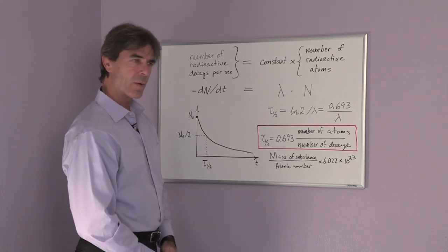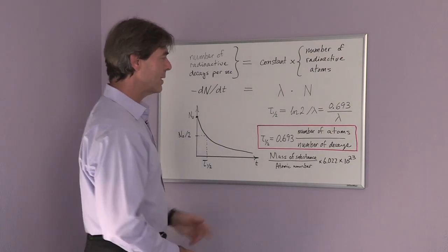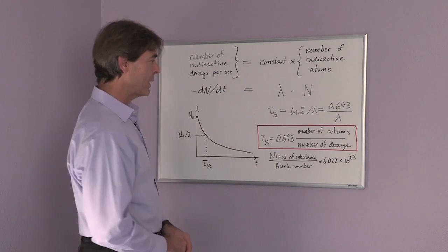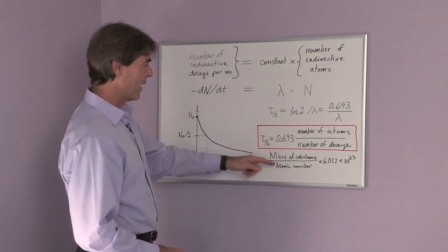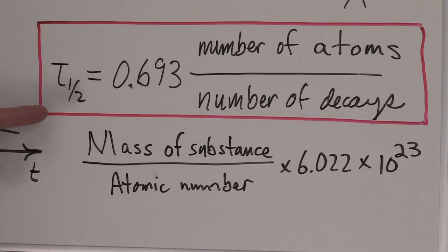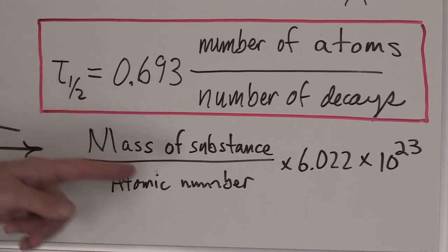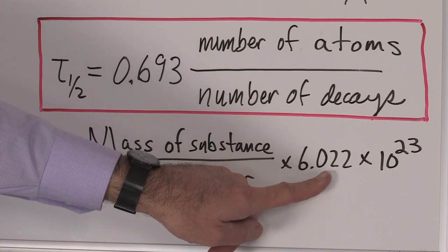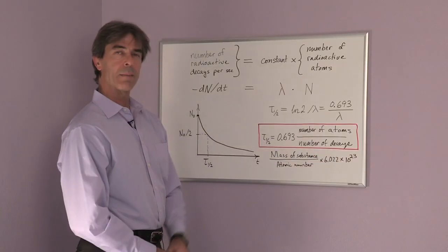You might ask, how do I get the number of atoms? First, we need to know how many moles of the substance we have. We take the mass of the radioactive substance, divide by its atomic number, and multiply by 6.022 × 10²³.